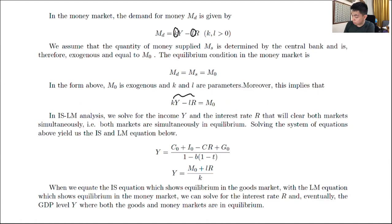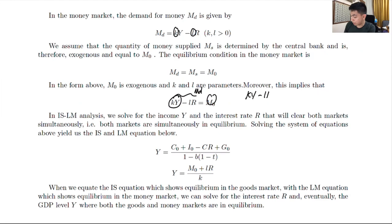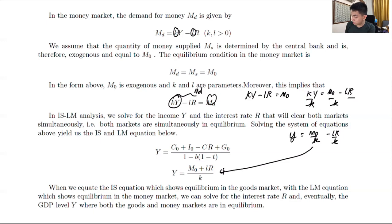So you have KY minus LR equals M₀. You can transpose the LR to get KY equals M₀ minus LR, then divide everything by K to get Y equals M₀ over K minus LR over K. That represents your LM equation, and the earlier derivation represents your IS equation.